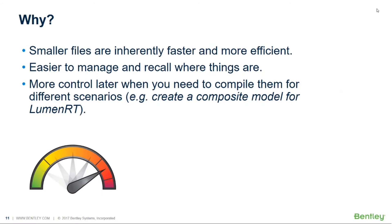Why is segregation a best practice? Several reasons. Smaller files are inherently faster and more efficient. They're easier to manage and easier to recall where things are. When you break them out it's easier to find and manage things. It also gives much more control when you want to compile data for different scenarios — for example, creating an iModel to go out into the field, or a composite model for Lumion and visualization. If everything's in one file you'll get a lot of stuff you don't need, whereas segregated data is much easier to work with efficiently.